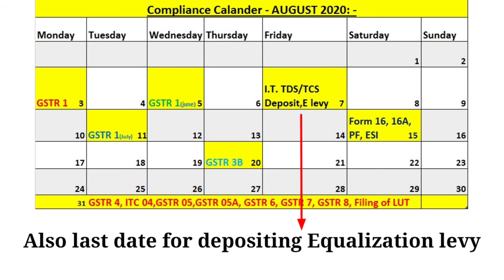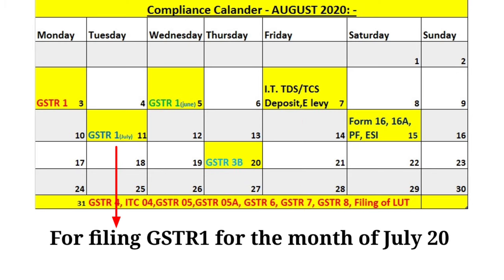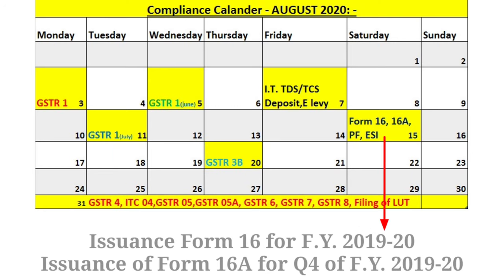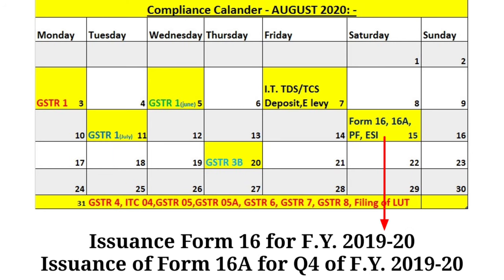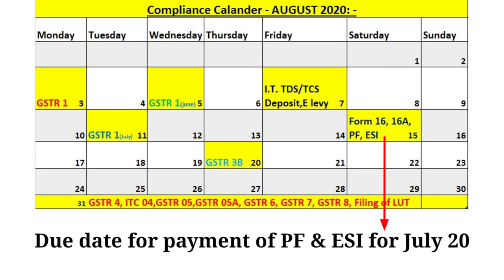August 7th is also the due date for Equalization Levy deposit. August 11th is the due date for filing GSTR1 for the month of July 2020 whose aggregate turnover exceeds 1.5 crore. August 15th is the due date to issue Form 16 to employees for the financial year 2019-20, and also to issue Form 16A of Q4 for financial year 2019-20. Payment of PF and ESI for the month of July 2020 is also due on 15th August.